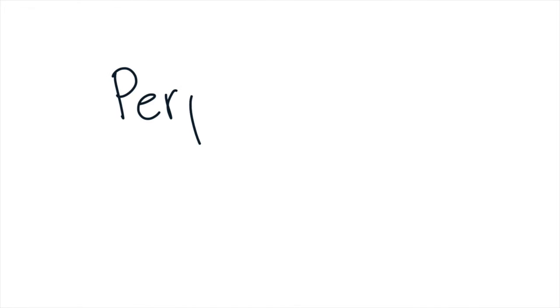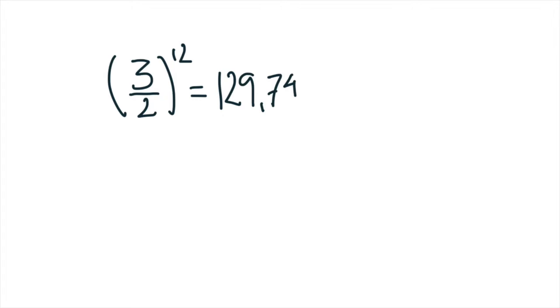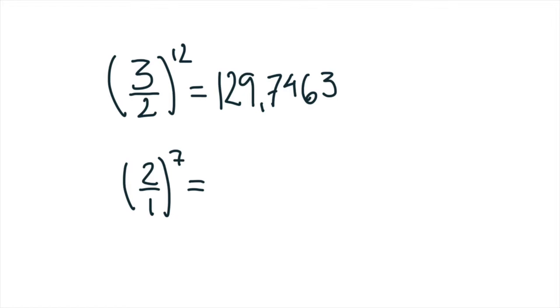And the frequency ratio for a perfect fifth is 3 divided by 2, 3 to 2, or 1 and a half. It's all the same, but you could spell it in different ways. And if we multiply 12 fifths with each other, the answer is 129.7463. And if we multiply 7 octaves on top of each other, you know an octave has the frequency ratio 2, or 2 divided by 1, it's the same. The answer is 128.